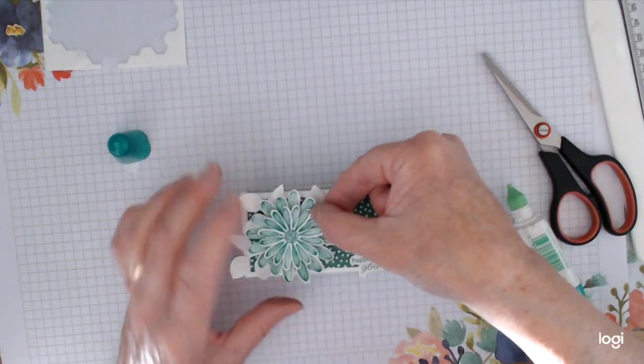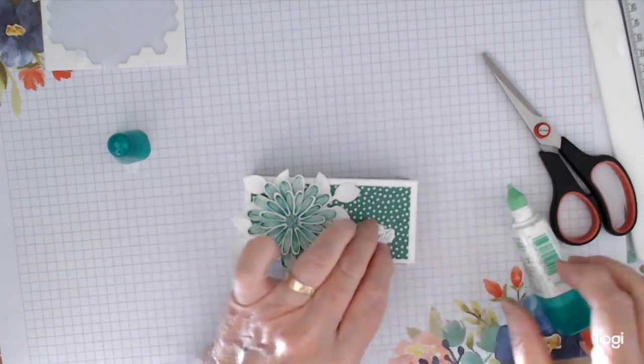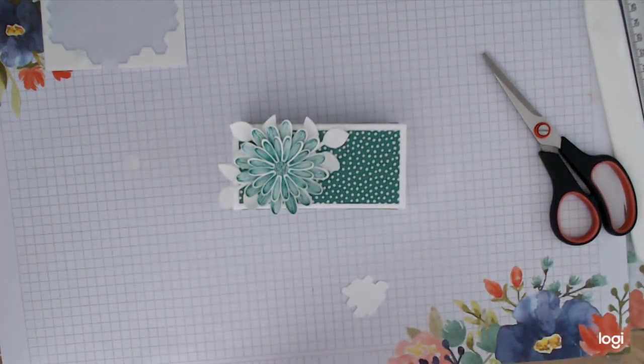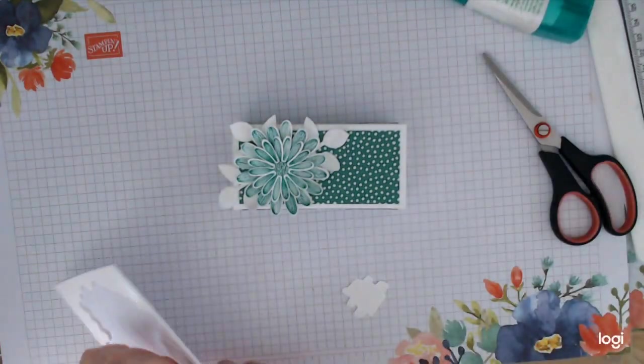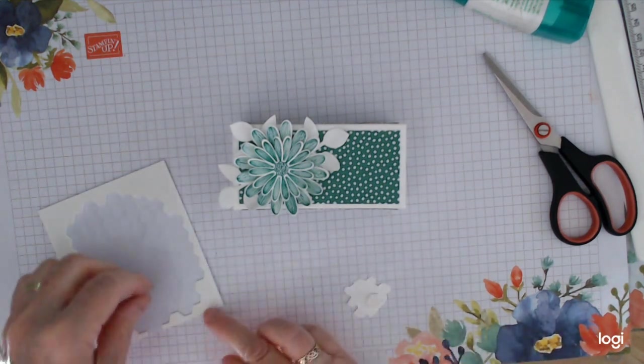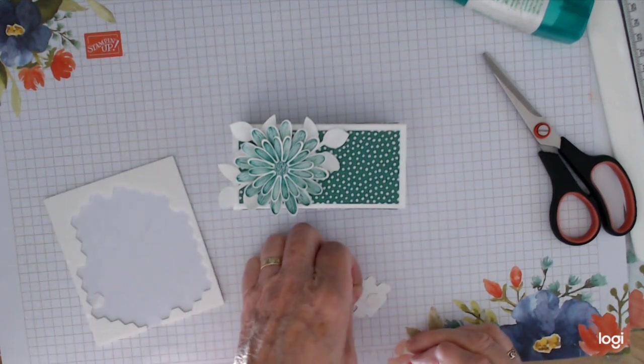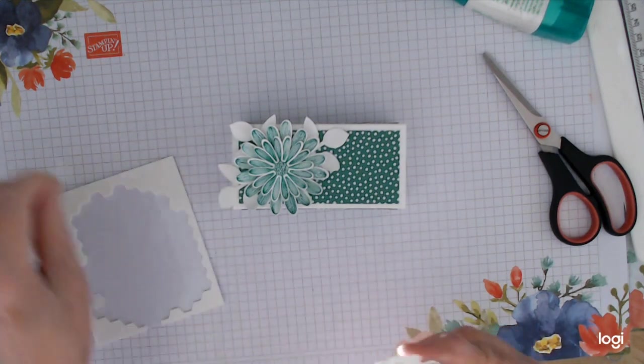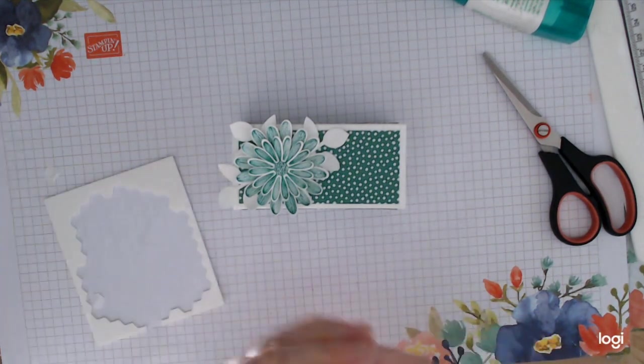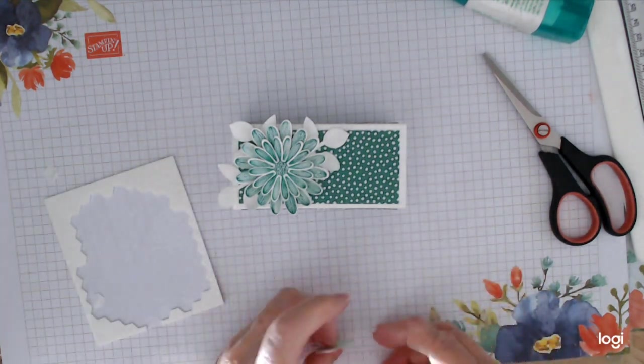And then just line that flower up and pop that where you think it's going to look good. And then we're going to pop the whole lot on with another dimensional. So that should sit about there.